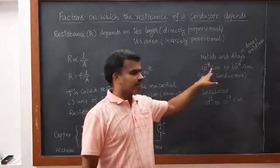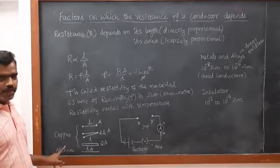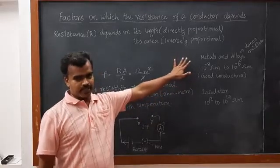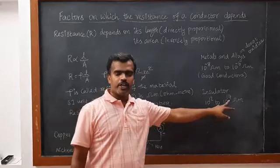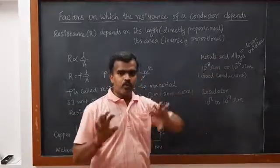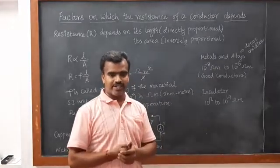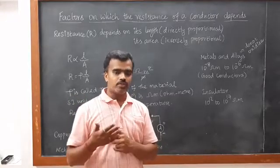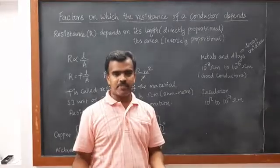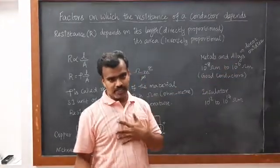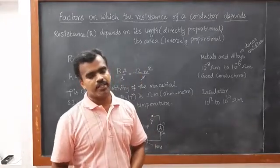Metals and alloys have resistivity in the range of 10 to the power minus 8 ohm-meter to 10 to the power minus 6 ohm-meter. These are called good conductors — they conduct current as well as heat. Insulators have a resistivity range of 10 to the power 12 to 10 to the power 17 ohm-meter. Metals like copper and aluminum are used for transmission, while alloys are used in electrical heating devices like toasters because alloys do not oxidize at high temperatures. Tungsten is used in bulbs due to its high resistivity.